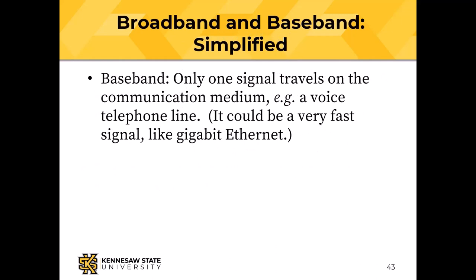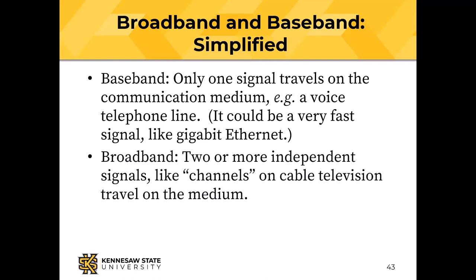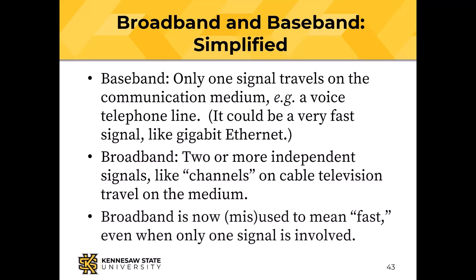'Broadband' has been misused to mean speed. Simplified: baseband means only one signal — like a voice telephone line. Gigabit Ethernet is baseband; there's only one signal on that wire, even though it's very fast. Broadband means two or more independent signals, like channels on cable TV.